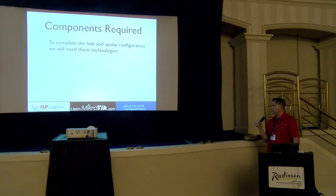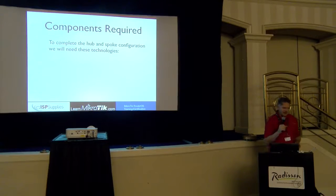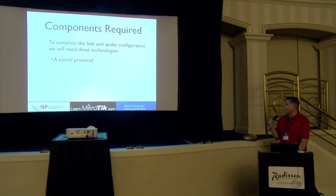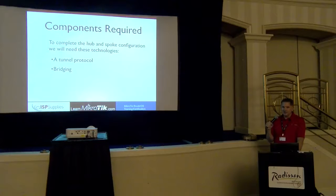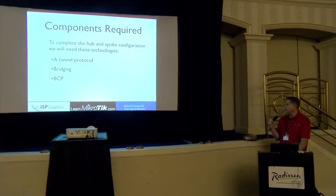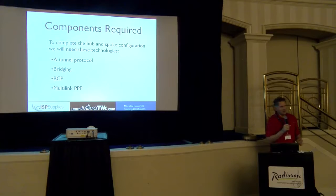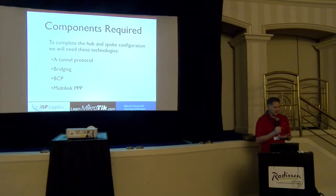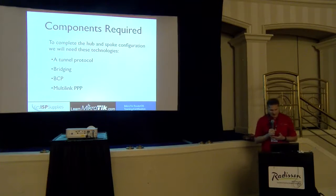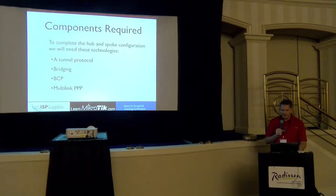To complete a hub-and-spoke configuration like this, we need several technologies. I don't like to say acronyms without defining them. First, we need a tunneling protocol — we'll use L2TP. We need bridging, which is pretty obvious. We need BCP, the Bridge Control Protocol. And one more thing I didn't understand at first: we need a way to make things work correctly in the background — Microtik has that already and it's called Multilink PPP. It's actually really old.